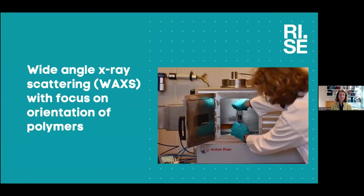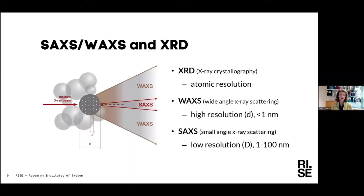Now I will talk about wide-angle X-ray scattering with a focus on orientation of polymers. In small-angle X-ray scattering, wide-angle X-ray scattering and X-ray crystallography, the incident X-ray beam interacts with the sample. The methods deliver structural information of different dimensions: XRD gives atomic resolution, WAXS gives higher resolution, and SAXS gives lower resolution.